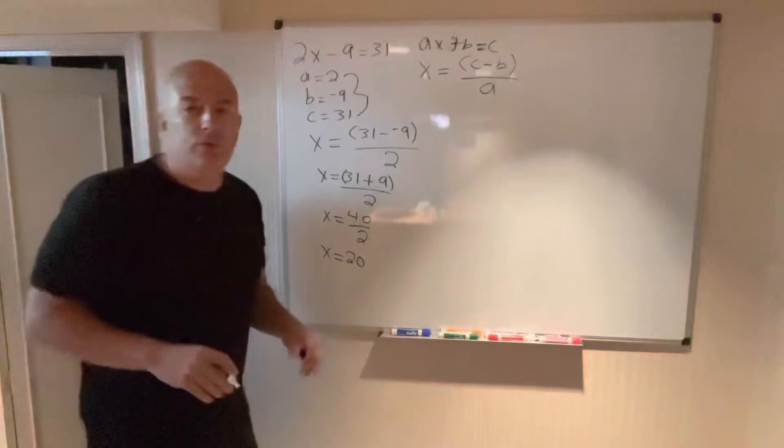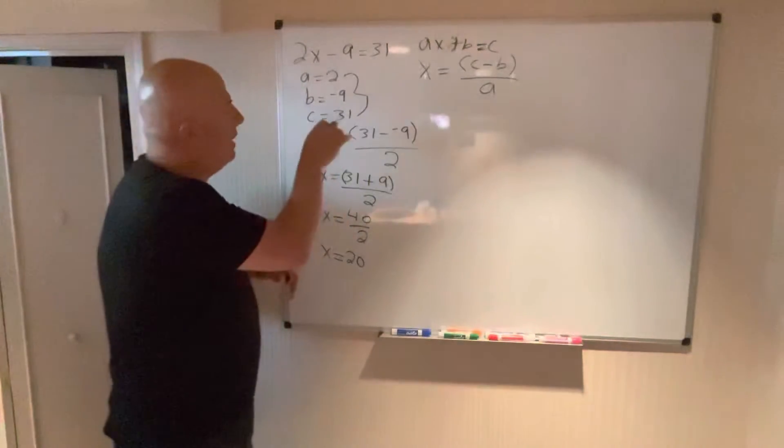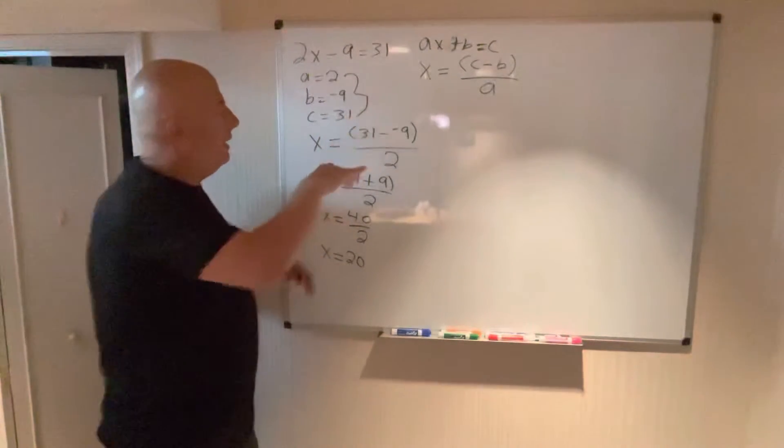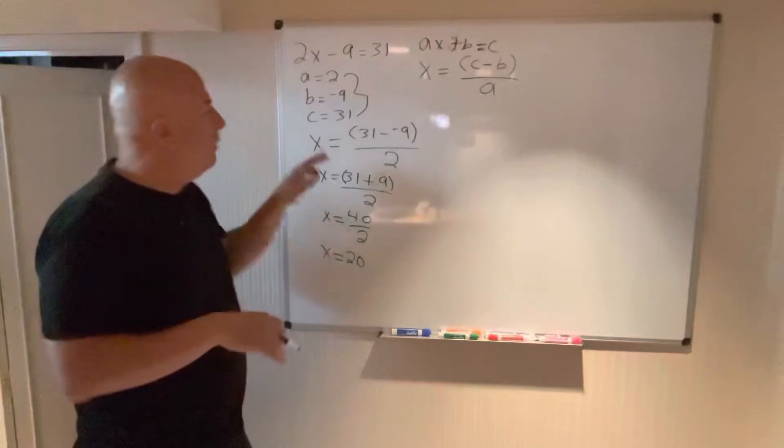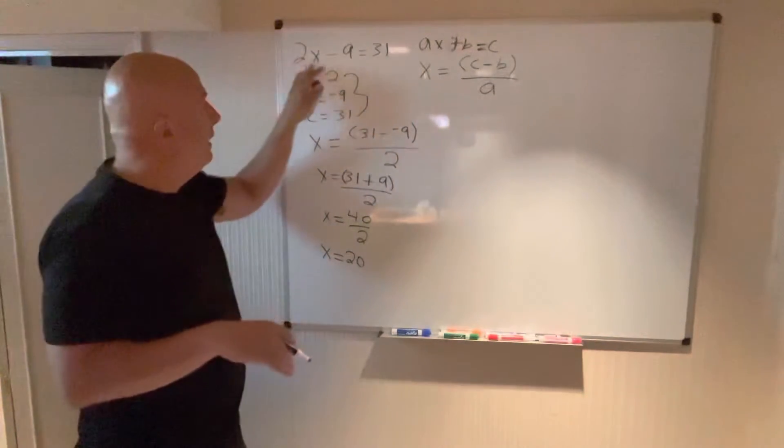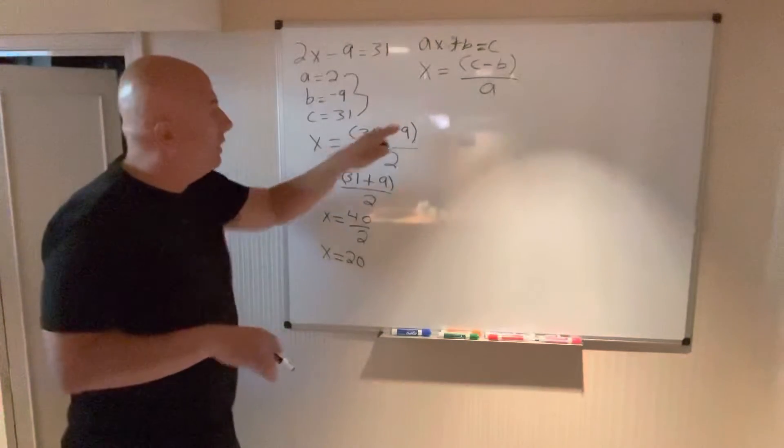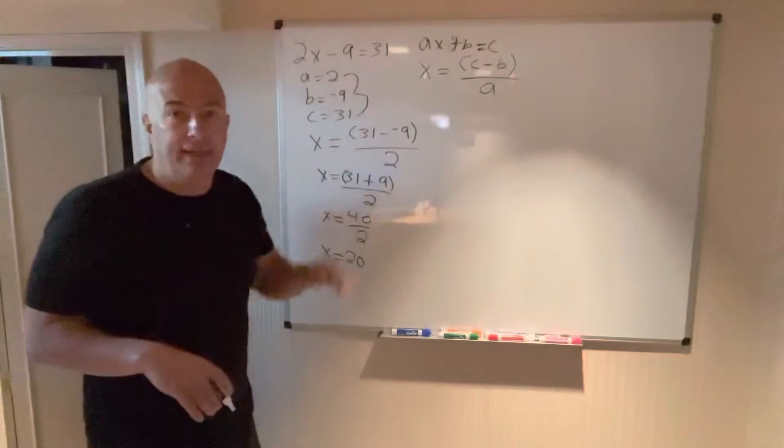See how fast that was? We didn't have to subtract one thing and then divide by another and simplify. We simply pick off our three values, in this case a, b, and c, plug into this formula, and we got our answer.